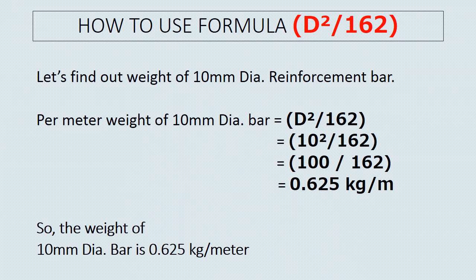Let's find out the weight of a 10 mm diameter reinforcement bar. Per meter weight of 10 mm diameter bar equals D²/162. By putting the value of the diameter in the formula and solving, we get the answer 0.625 kg per meter. So the weight of a 10 mm diameter bar is 0.625 kg per meter.